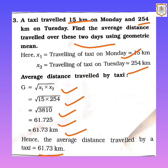In the topic of geometric mean, we learned that if we have to find the 8th root, we do the square root process three times. If we have to find the 4th root, we do the square root process twice. And if we have to find the square root, we do it only once. Go through exercise 3.3 and revise it thoroughly. Thank you.